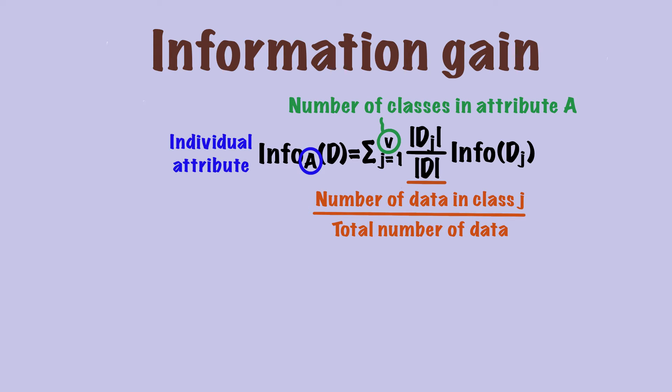Next, this dj divided by d is just the number of data in class j divided by the total number of data points. Last, the info dj is the entropy of class j. The best way to understand the formula is to look at an example.